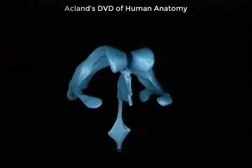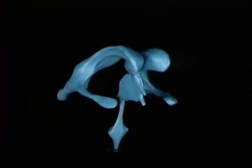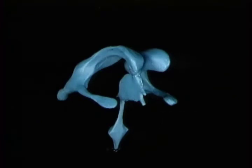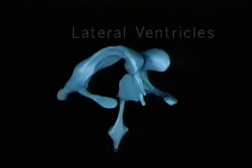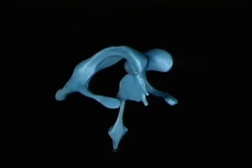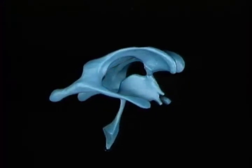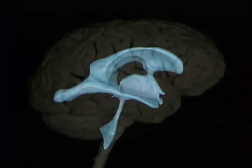This model shows the shape of the ventricular system. It's formed by two small cavities in the midline, the third ventricle and the fourth ventricle, and two much larger cavities, the lateral ventricles, which connect to the third ventricle here. It's the third ventricle because the lateral ventricles are counted as the first two.